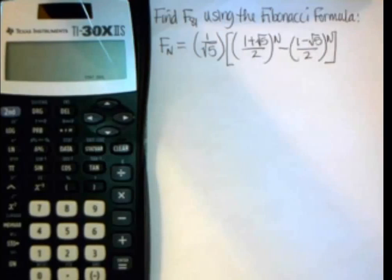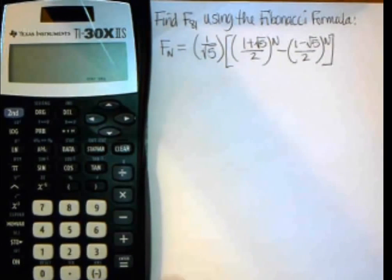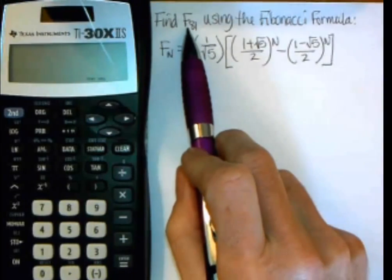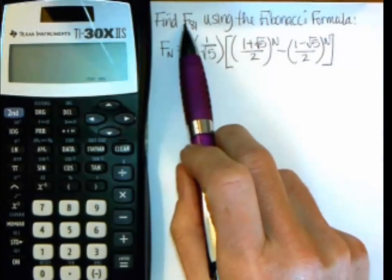Here's an example using the Fibonacci formula, just so that you can see how I do it on the calculator. I want to find F of 81, F sub 81.